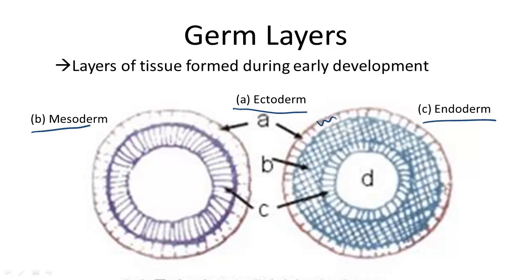The ectoderm is the outermost layer of an embryo. This layer becomes the skin and the nervous system. You can remember ectoderm by breaking off its prefix, ecto, meaning out. Think of out as the outermost layer of your body, such as the skin.